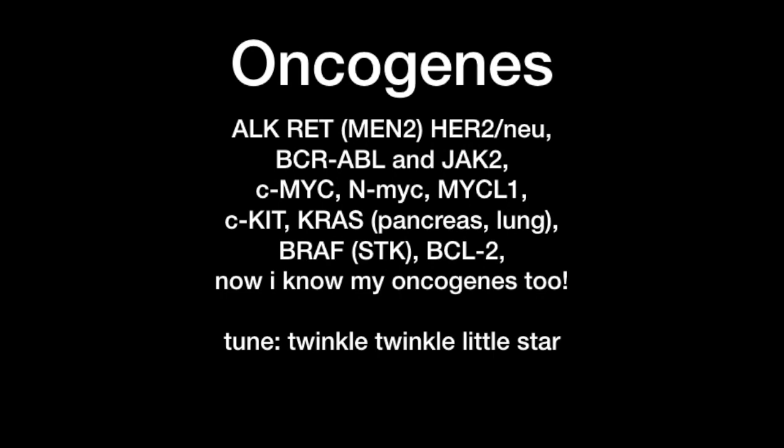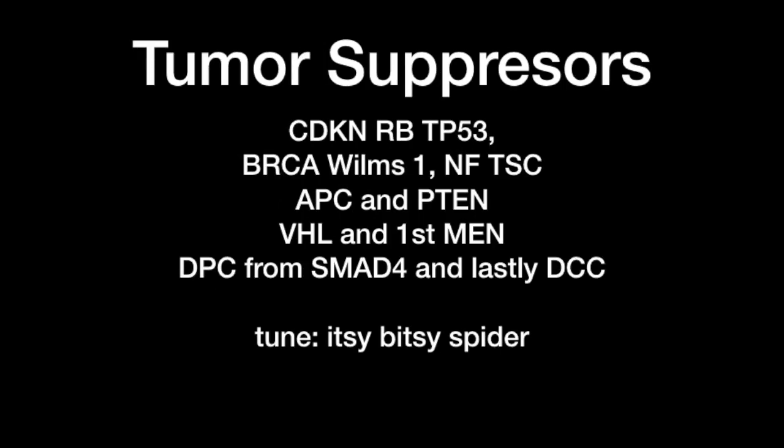Next, I have another mnemonic to memorize the tumor suppressor genes. This one is a little shorter and goes to the tune of the Itsy-Bitsy Spider. The associated conditions are important to know — you can often tell from the name of each gene: NF gives rise to neurofibromatosis, TSC causes tuberous sclerosis, VHL causes Von Hippel-Lindau disease, and MEN causes multiple endocrine neoplasia.